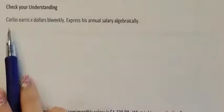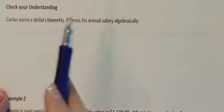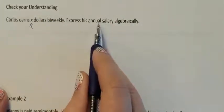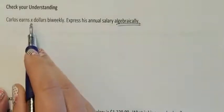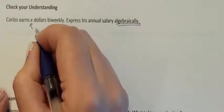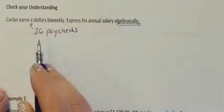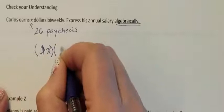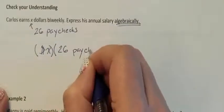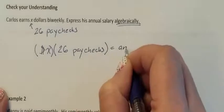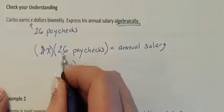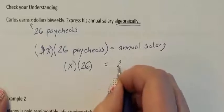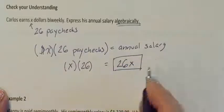Now let's check for understanding. Carlos earns X dollars bi-weekly, meaning 26 paychecks of X dollars. It asks us to express his annual salary algebraically — the X stays as X because we don't know the value. He has 26 paychecks, each paying X dollars, so his annual salary is 26 times X, which equals 26X.